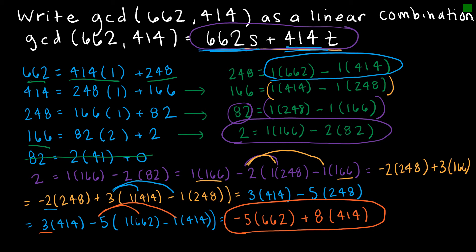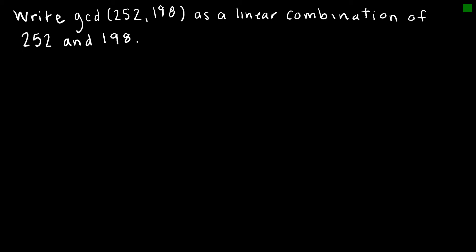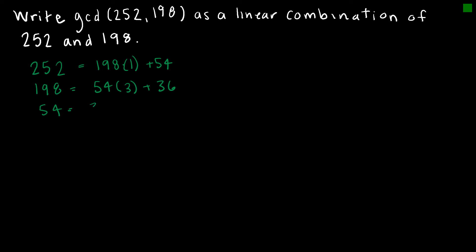This is how I write the greatest common divisor of 662 and 414 as a linear combination. Let's take a look at one more practice example together. I'm going to start by writing 252 and using the Euclidean algorithm: 252 equals 198 times 1 plus 54, then 198 equals 54 times 3 plus 36, then 54 equals 36 times 1 plus 18, then 36 equals 18 times 2 plus 0. We ignore the plus-0 step, so the greatest common divisor is 18.